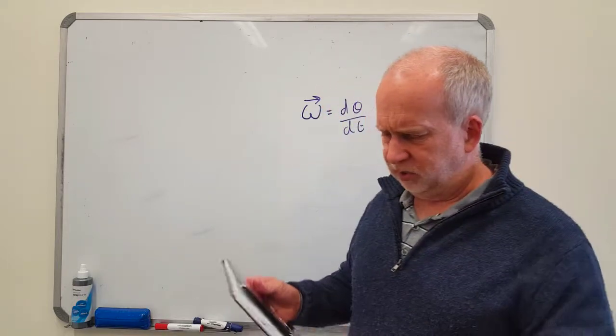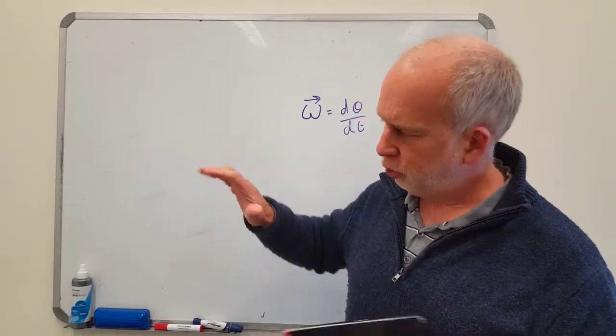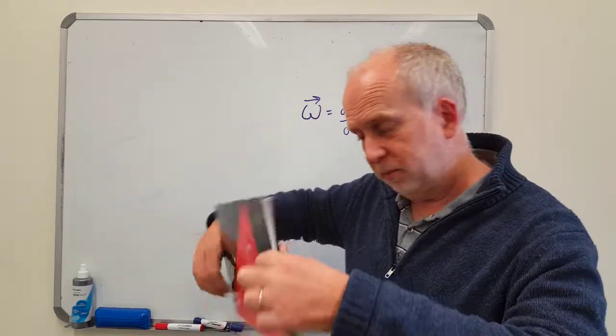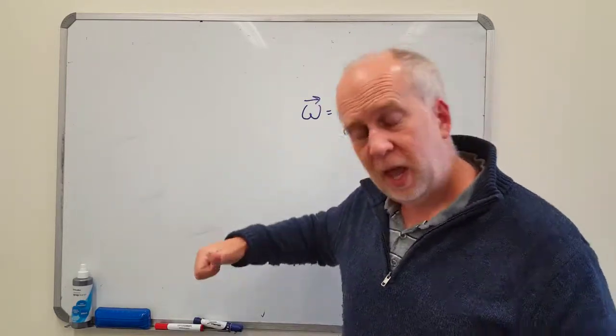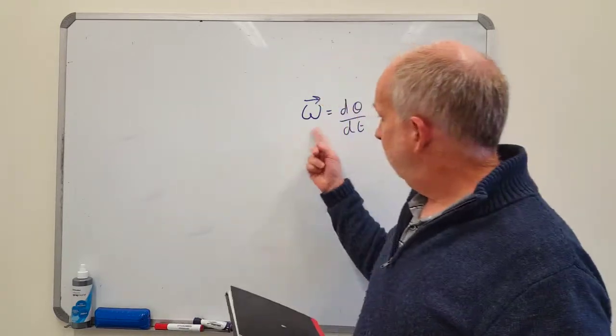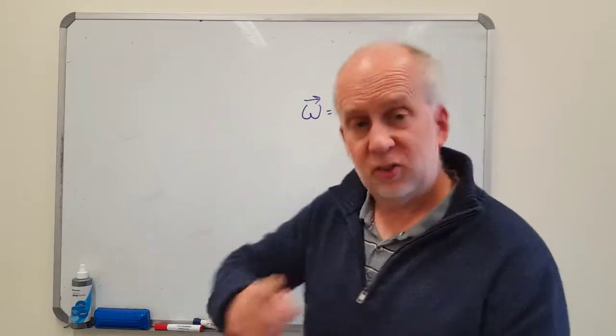But the way it works is, you look at the axis of rotation, and you curl the fingers of your right hand in the direction in which things are spinning. So in this case it would be like this. And then the thumb points in the direction of the vector angular velocity. So if it's spinning like this, fingers, it's in this direction.